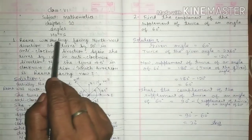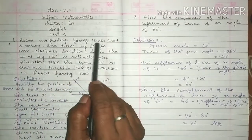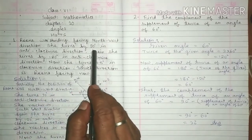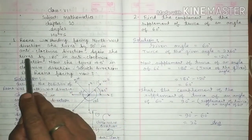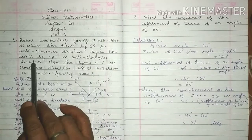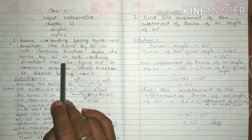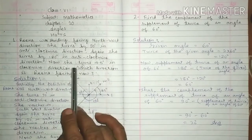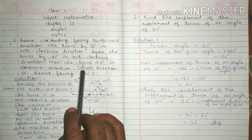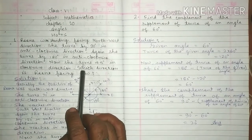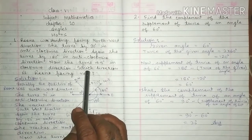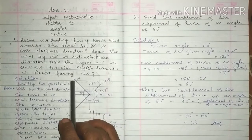Rina was standing facing north-west direction. She turns by 90 degrees in anti-clockwise direction. Again she turns by 180 degrees in anti-clockwise direction. Now she turns 45 degrees in clockwise direction. Which direction is Rina facing now?